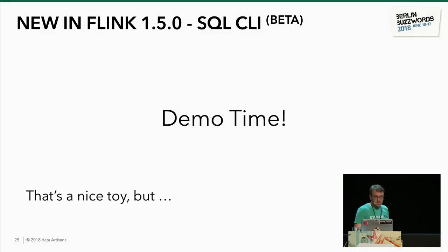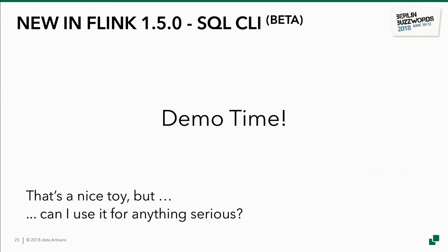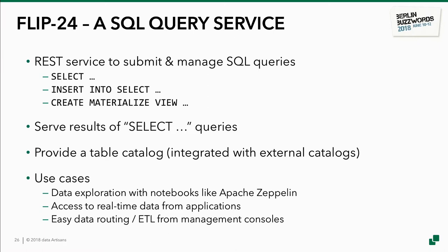That's a nice toy, but you can only use the CLI client to look into the data in your streams — not much more. Therefore, the Flink community started FLIP-24, a Flink Improvement Proposal for a query service. We envisioned this as a REST service where you could submit and manage SQL queries — select queries and insert-into-select queries that write directly into a new table. It should also be able to serve the results of a SQL query back, and integrate with table catalogs like Hive catalog or schema registries.